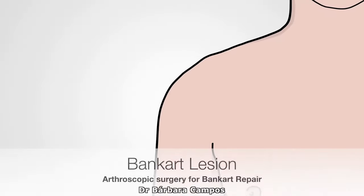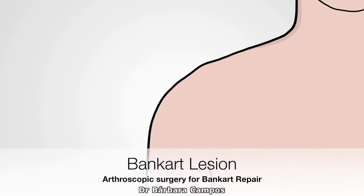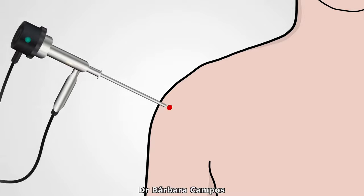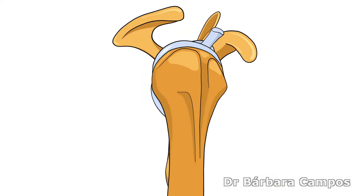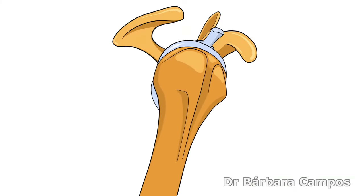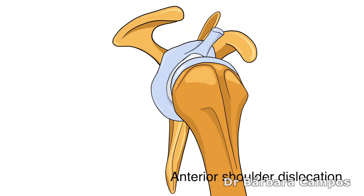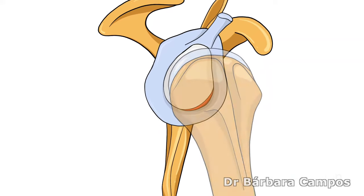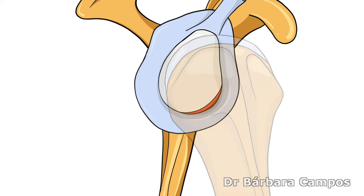We begin by making small incisions or portals where the camera and the arthroscopic instruments can enter the joint. The avulsion of the anteroinferior capsule is generally called a Bankart lesion.